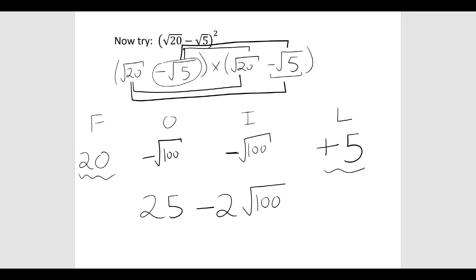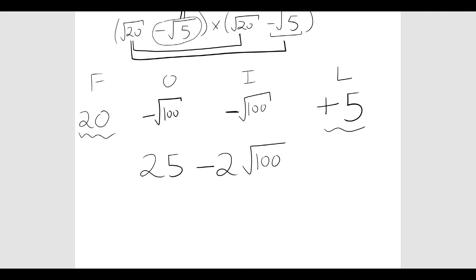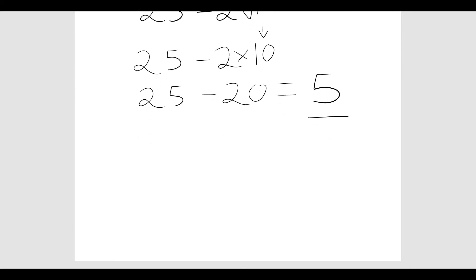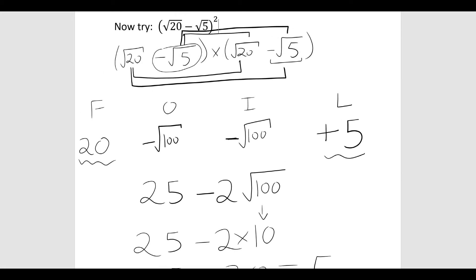But we should know the square root of 100 is 10. So we have 25 take away 2 lots of 10. So we have 25 take away 20, which is 5. Just to really consolidate this, let's try one more that's similar.